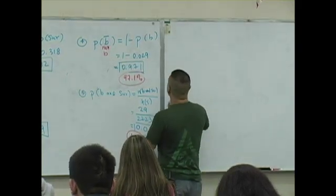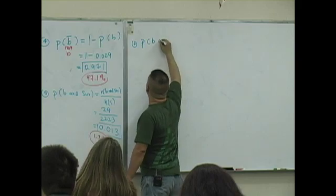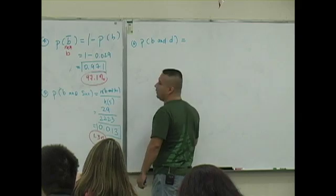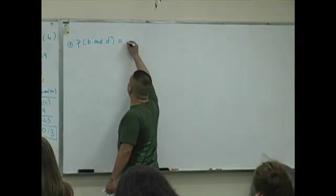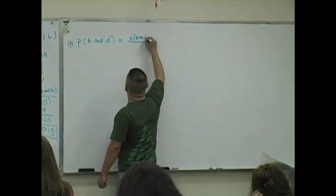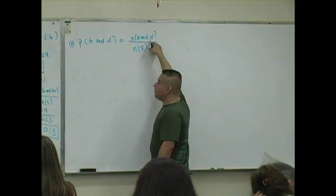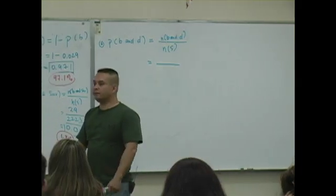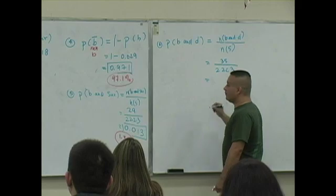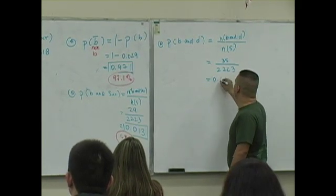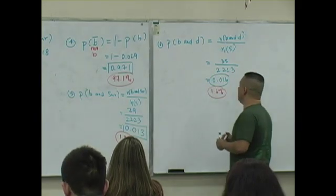What's question six say? Boys who do not. What does that mean? You're a what? A boy who survived. A boy and you what? And you what? Died. Okay? You're a boy and you died. A horrible thing. Okay? So number of boys. So you're looking for a passenger who satisfies both criteria. Being a boy and what? And dying. So how many boys died? 35. How many passengers? 2,223. What's this as a probability value? Zero point... And what is that as a percent? 1.6. So 1.6% of the passengers were boys who died. Okay?